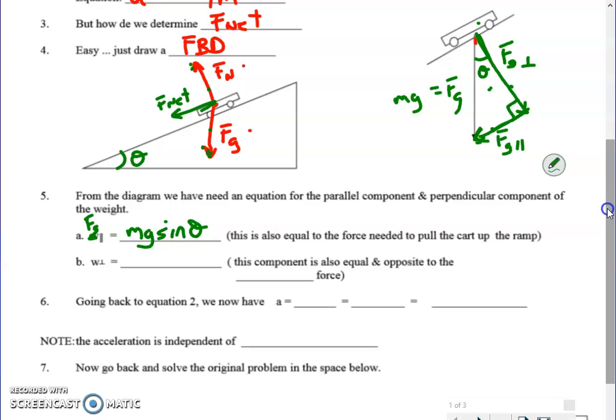So what I would say and I'm going to write that over here is that Fg parallel is equal to the weight which I'm going to call mg times the sine of the ramp angle. Okay so if you don't quite see that let me do it here.